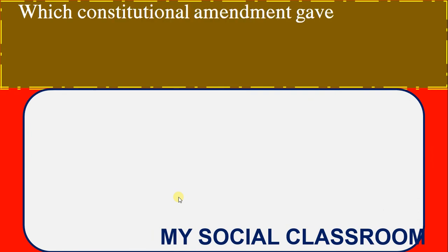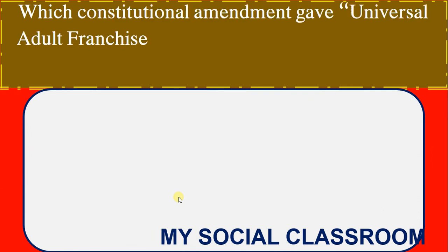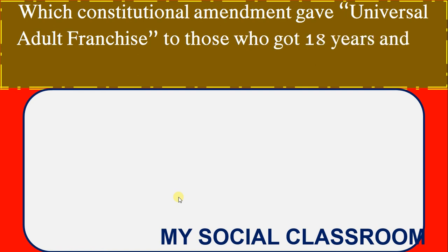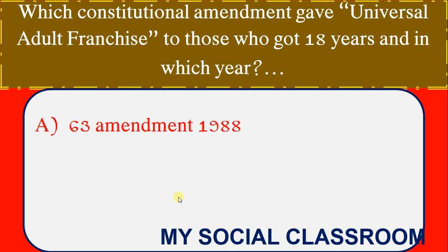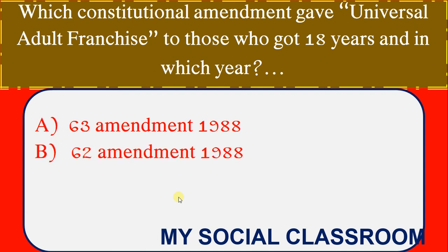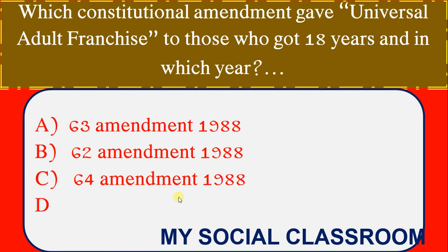Which constitutional amendment gave universal adult franchise to those who are 18 years of age, and in which year? Options: 63rd Amendment 1988, 62nd Amendment 1988, 64th Amendment 1988, 65th Amendment 1988. Correct Answer: 63rd Amendment 1988.